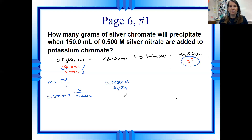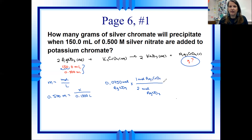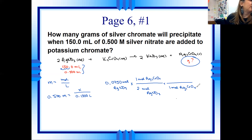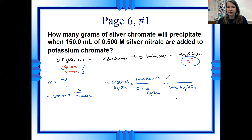We're trying to find grams of silver chromate. Once we have moles of silver nitrate, we can do stoichiometry using the mole ratio: 2 moles of silver nitrate to 1 mole of silver chromate. Then we use the molar mass of silver chromate. Chromium's molar mass is 52 — glad I checked because I was going to use 54. Adding the oxygens gives a molar mass of 331.74 grams per mole for silver chromate.